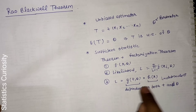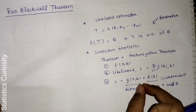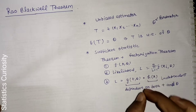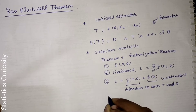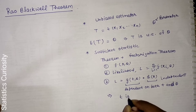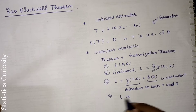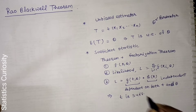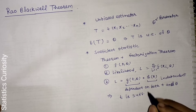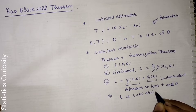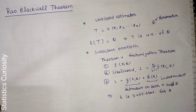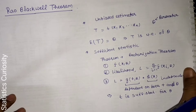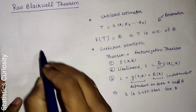So if we can write the likelihood as a product of these two terms — g(T, theta) × h(x) — then T is a sufficient statistic for parameter theta.